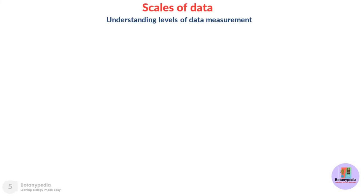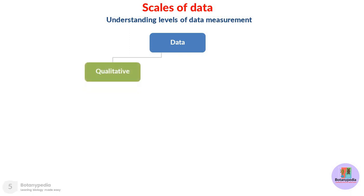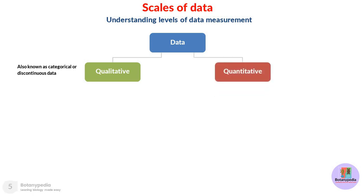Now we will look at the various levels of data measurement, also known as scales of data. There are two types of data: qualitative data, also known as categorical data or discontinuous data, and quantitative data, also known as continuous data or numerical data. When we are doing a survey and the answers can only be categorized into distinct categories, that kind of data is referred to as qualitative data.